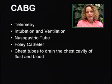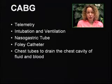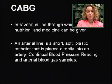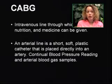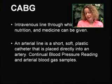Patients following a CABG will be on telemetry, so we'll be monitoring their heart rhythm. They will be intubated and ventilated, have a nasogastric tube, a Foley catheter, and chest tubes to drain the chest cavity of fluid and blood. They will have an IV line for fluids, nutrition, and medicine, and an arterial line — a short, soft plastic catheter placed directly into an artery — which allows for continual blood pressure reading and arterial blood gas samples.